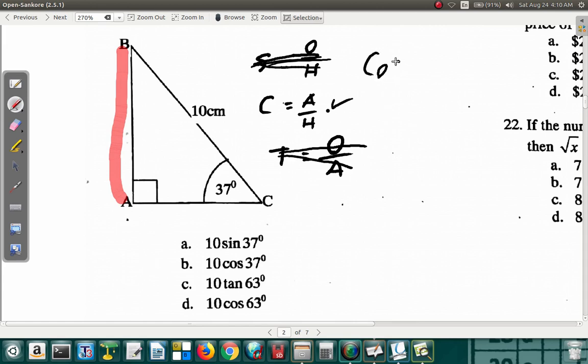Cosine of 37 is the adjacent, which is AC, over the hypotenuse, which is 10. BC is 10. Now, we want to find out what AC is. They asked for AC. Let's get rid of the 10—multiply by 10, 10 cancels 10. So AC is 10 times cos 37, which is B.